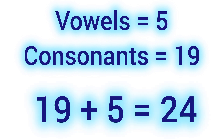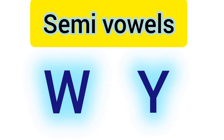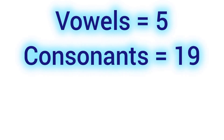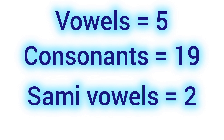Now, the vowels are 5 and the consonants are 19, and 5 plus 19 is equal to 24. But our letters are 26 — that means where are our two letters? Those two letters are W and Y, which are called semi-vowels, because these two letters W and Y can function as consonants or vowels. That's why they are called semi-vowels. Now we have completed the alphabets: we have 5 vowels, 19 consonants, and 2 semi-vowels in English alphabets.